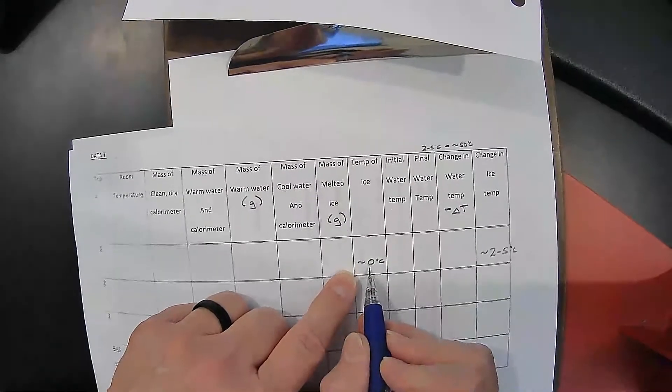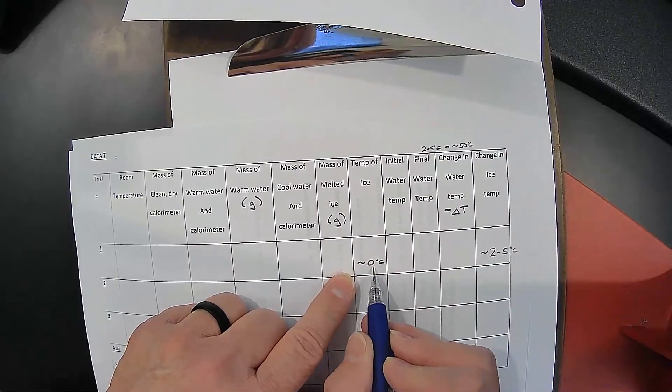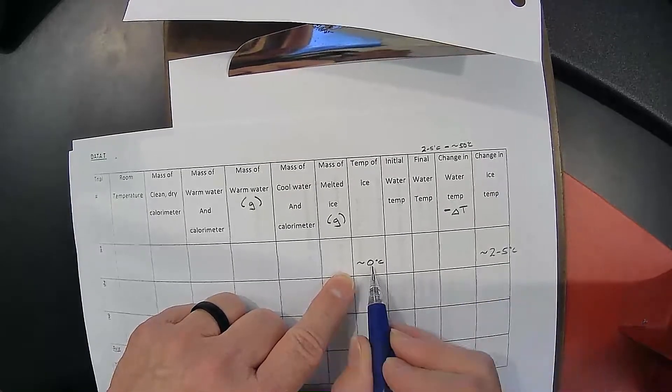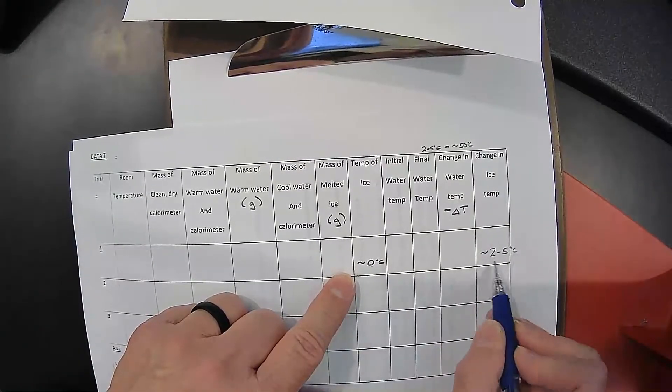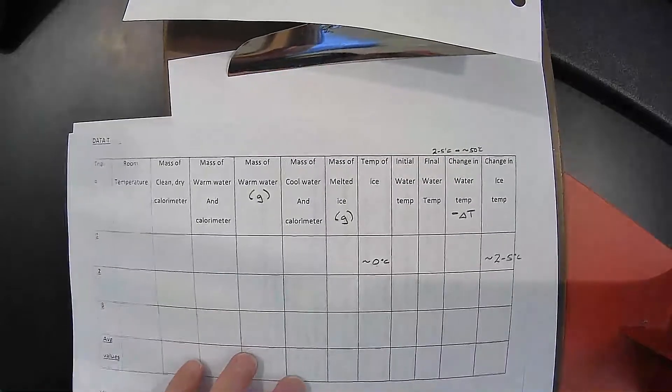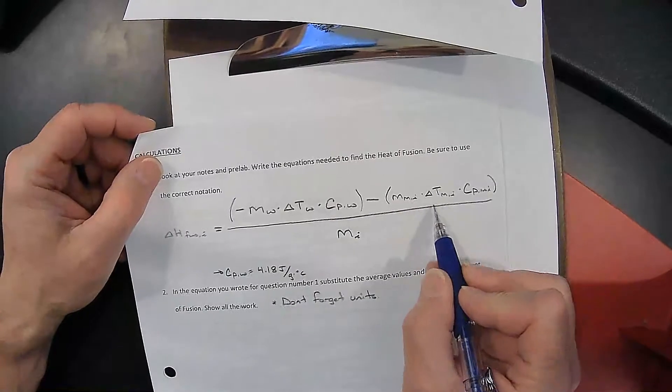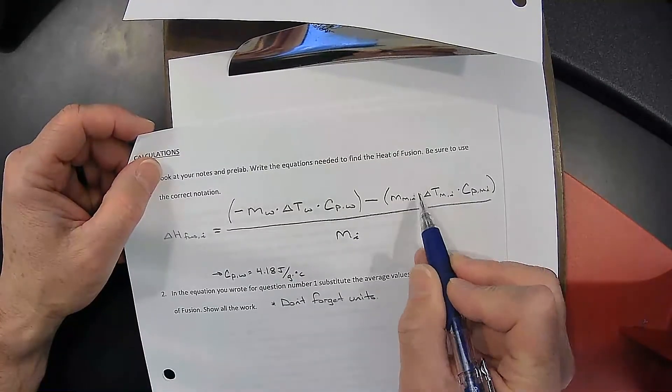It may be negative 0.5 or negative 1 or real close, but it's going to be close to 0. And your final here was close to 2 to 5. But this will be a positive value because the final is higher than the initial. So then that gives you your change in temperature of the melted ice.